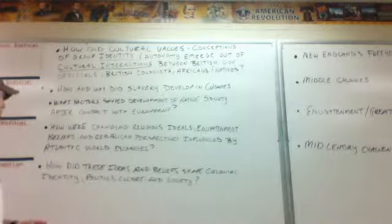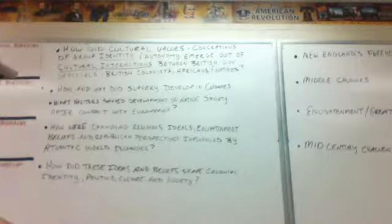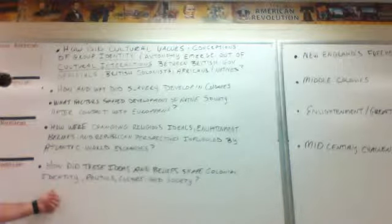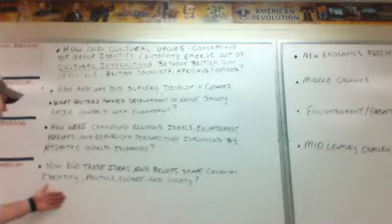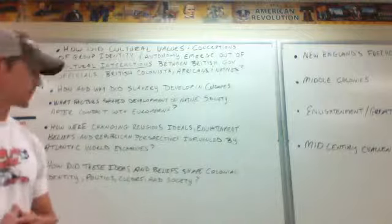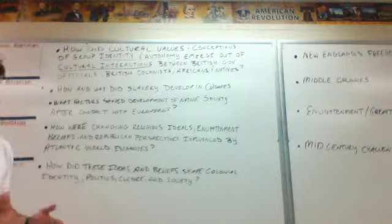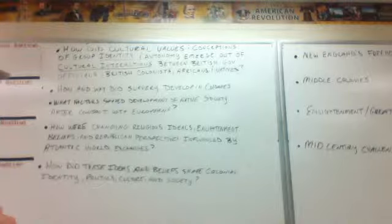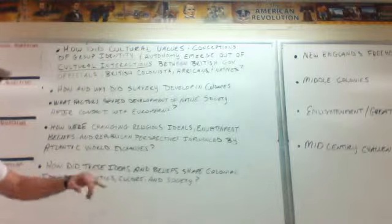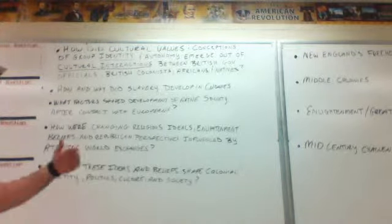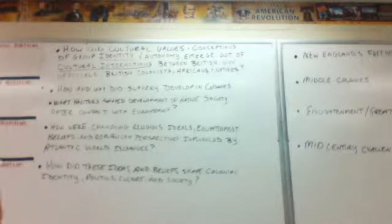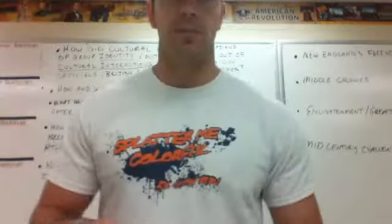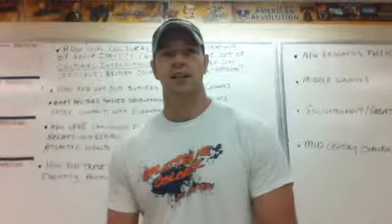How do these ideas and beliefs shape colonial identity, politics, culture, and society? The colonies basically break into three parts — the North, the Middle, and the Southern colonies, roughly four to five colonies apiece, each with its own identity. New Englanders are very different from Southerners. A Southern genteel society is very different from the Puritan society or the yeoman farmer society of the Middle colonies. Go into more depth on those, and we'll discuss it in class.